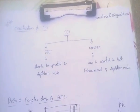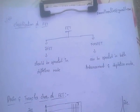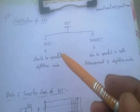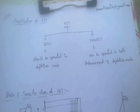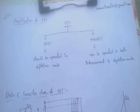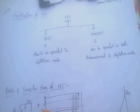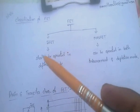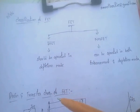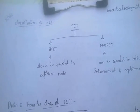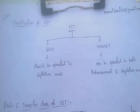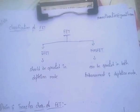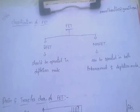Coming to the classification of FET: FET is divided into two types — JFET and MOSFET. JFET should be operated in Depletion Mode only. In the case of MOSFET, it can be operated in both Enhancement and Depletion Mode.